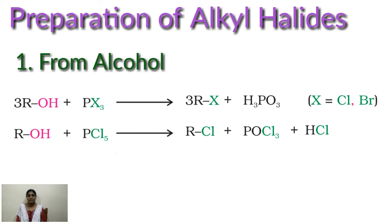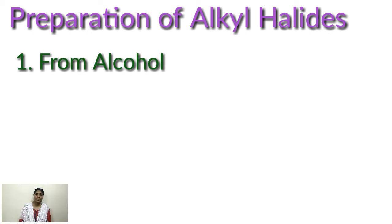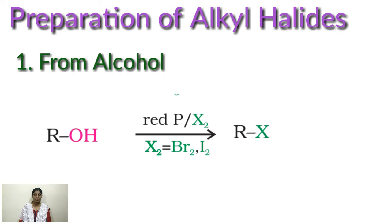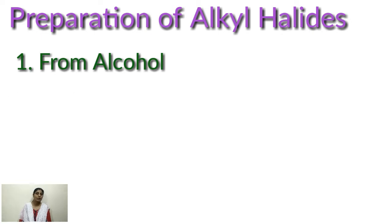Second one with phosphorus halides. The alcohol when treating with phosphorus halides you will get alkyl halide plus H3PO3. Here we can use PCl3 for formation of RCl and if you are using PBr3 you will get RBr. Instead of using PX3 you can use PCl5. So ROH plus PCl5 gives RCl plus POCl3 plus HCl. Phosphorus tribromide and triiodide are usually generated by the reaction of red phosphorus with bromine and iodine respectively. ROH treating with red phosphorus and X2 you are getting RX where X may be bromine or iodine.